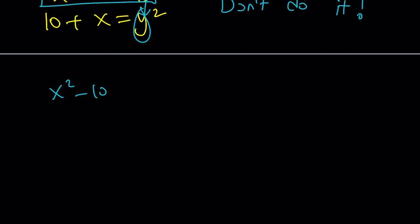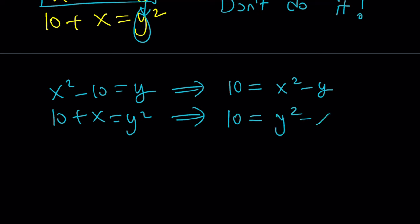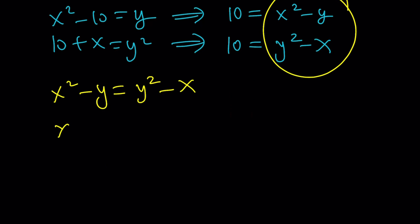Instead do this. Let me rewrite it. From here, 10 equals x squared minus y. From here, 10 equals y squared minus x. So these two are equal. And then we can write this.